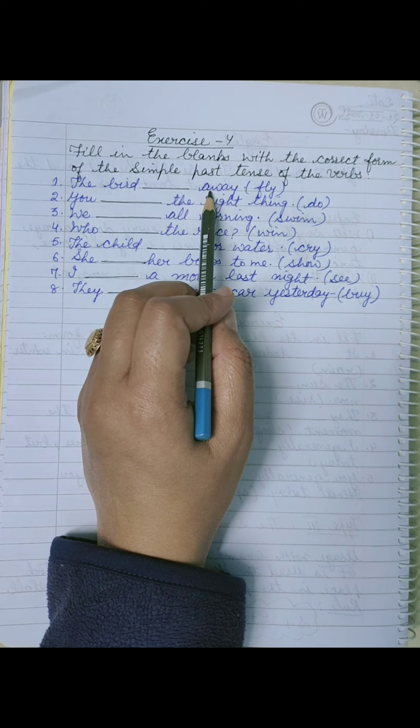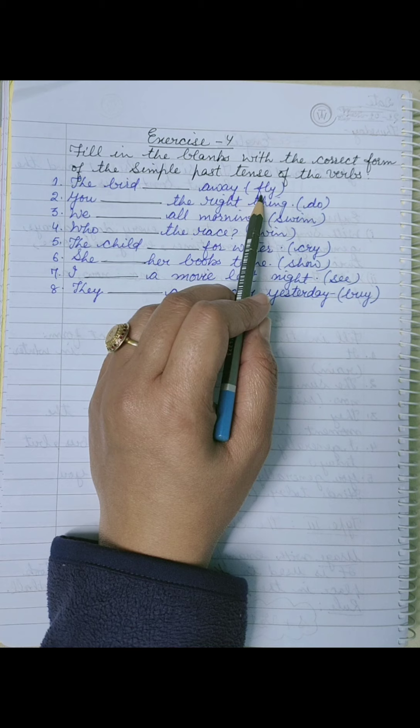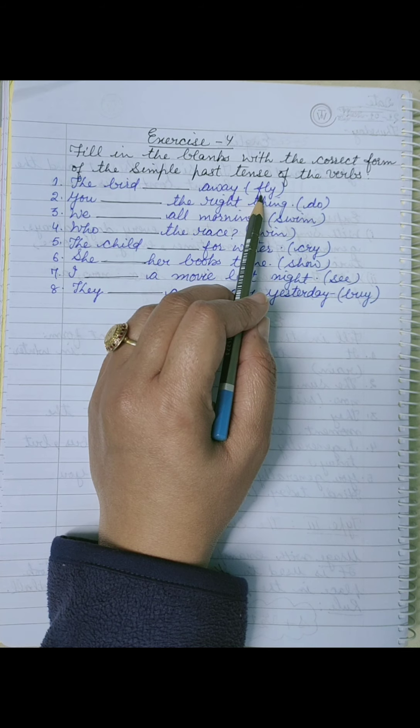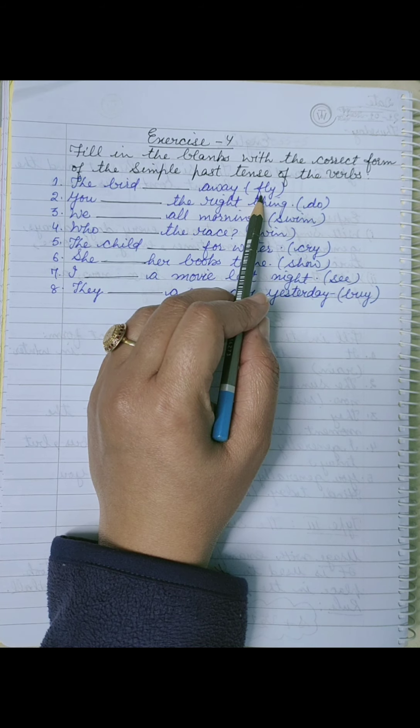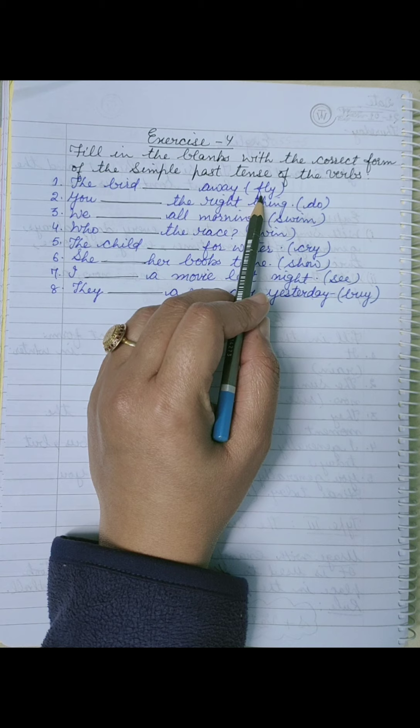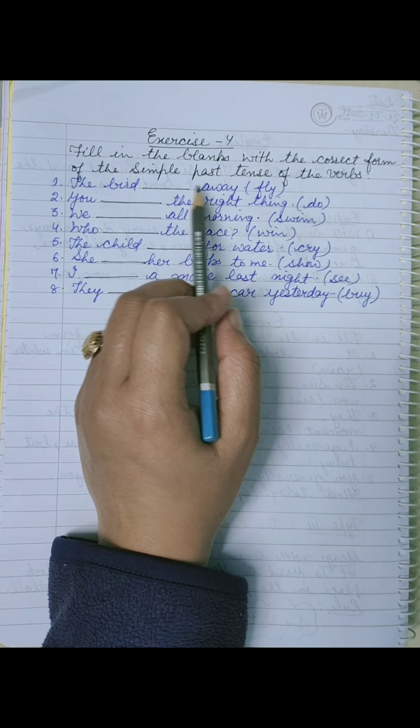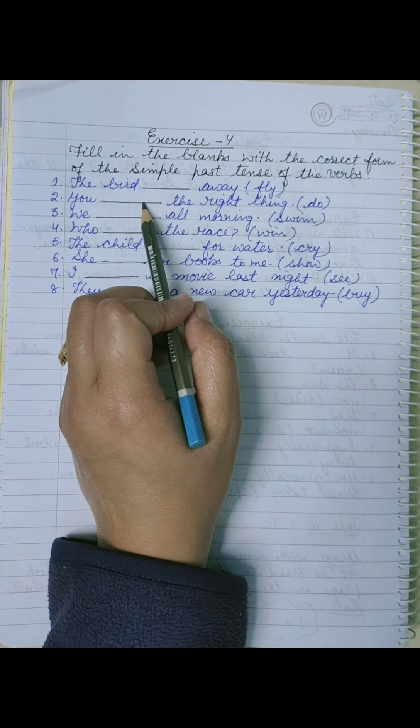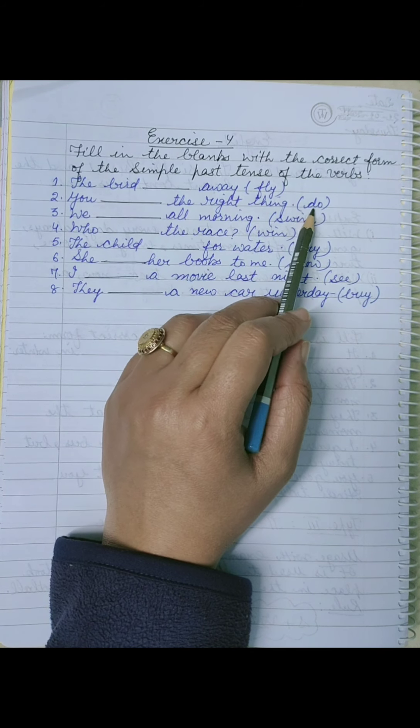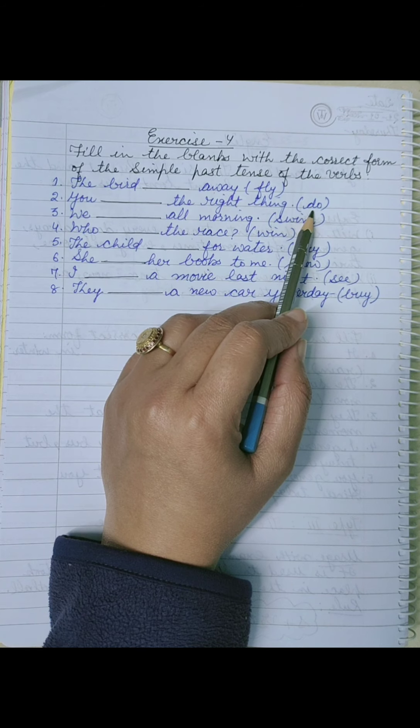First, the bird dash away - fly is given. The bird fly की second form fly, flew, and third flown. Fly, flew - the bird flew away. Second, you dash the right thing - do is given here.